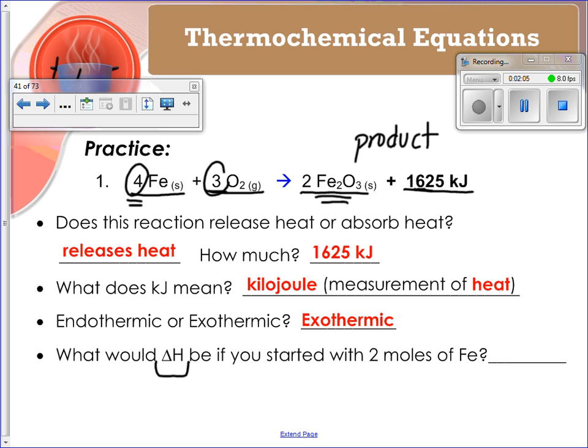So if you, instead of starting with four, you started with two, you can do stoichiometry for it. You can realize that that's half of what we have here. So 1625 divided by two is going to be equal to, and I have it written down somewhere, 812.5. Boom. There we go.